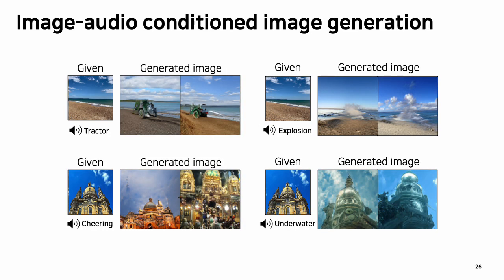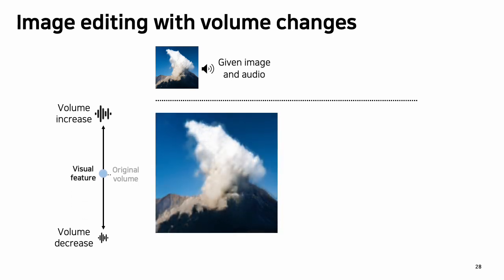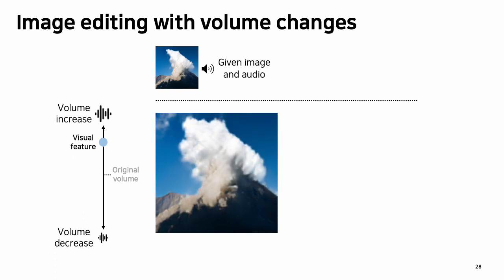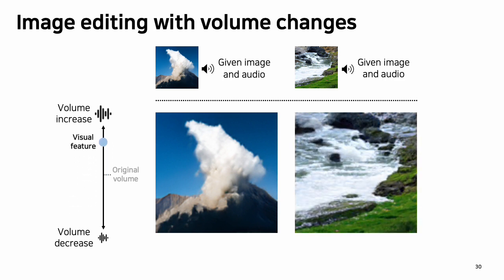In another experiment, we feed image and audio together to the model, allowing generation conditioned on both modalities. For example, we can insert a tractor onto a beach image, or stylize a party-looking building using cheering sound. Finally, we show image editing with volume changes: given a paired image and audio, we traverse the visual feature of the image in the direction of volume differences of the paired audio. The size of the volcano changes as the visual feature traverses toward the volume-changing direction, and similarly the flow of water changes with traversal.